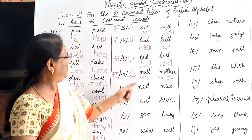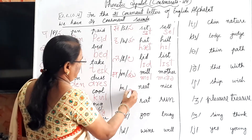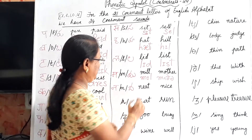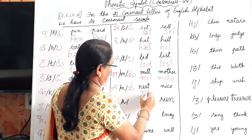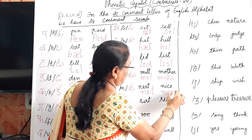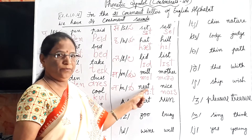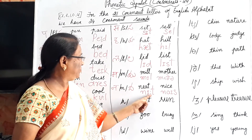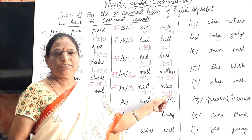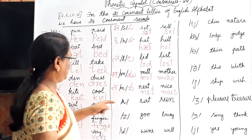N gives the /n/ sound. Neat, nice. In 'neat,' E produces the /iː/ sound. In 'nice,' I produces the /aɪ/ diphthong — a double vowel sound. Neat, nice.